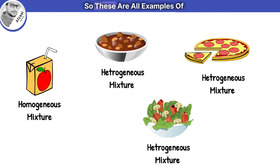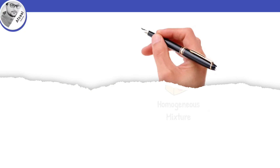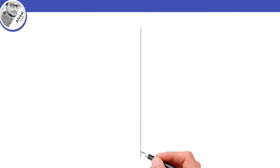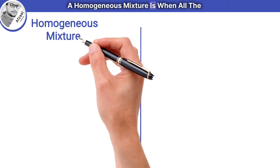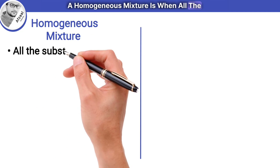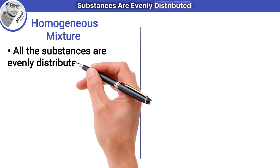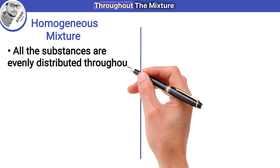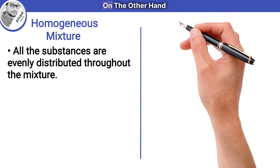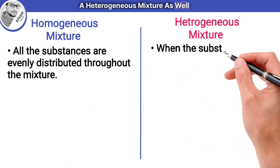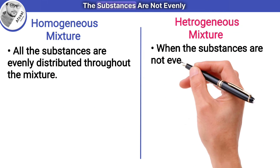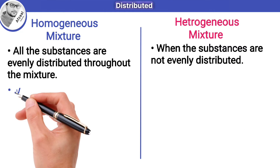Let me summarize the whole concept. A homogeneous mixture is when all the substances are evenly distributed throughout the mixture. On the other hand, a heterogeneous mixture is when the substances are not evenly distributed.